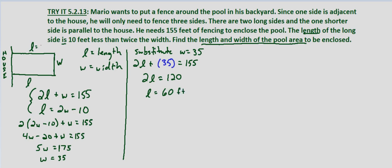So each one of these sides is 60 feet. It's a pretty big area. So then we also know that L equals 2W minus 10. So L equals 2 times W which was 35 minus 10, which equals 70 minus 10, which equals 60 feet.